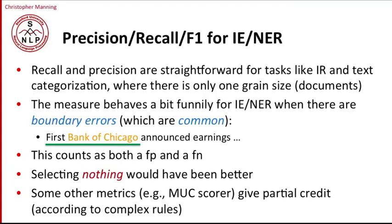Here's an example to give you a good sense of the problems which actually occur commonly in systems. Here's the piece of text: 'First Bank of Chicago announced earnings.' The correct entity is 'First Bank of Chicago,' which is a single organization name. However, our system made a little bit of a mistake — it said 'Bank of Chicago' is the name of an organization. So that means it's made a boundary error: it has the right boundary of the entity correct, but it has the left boundary wrong. This is the kind of error that NER systems make a lot.